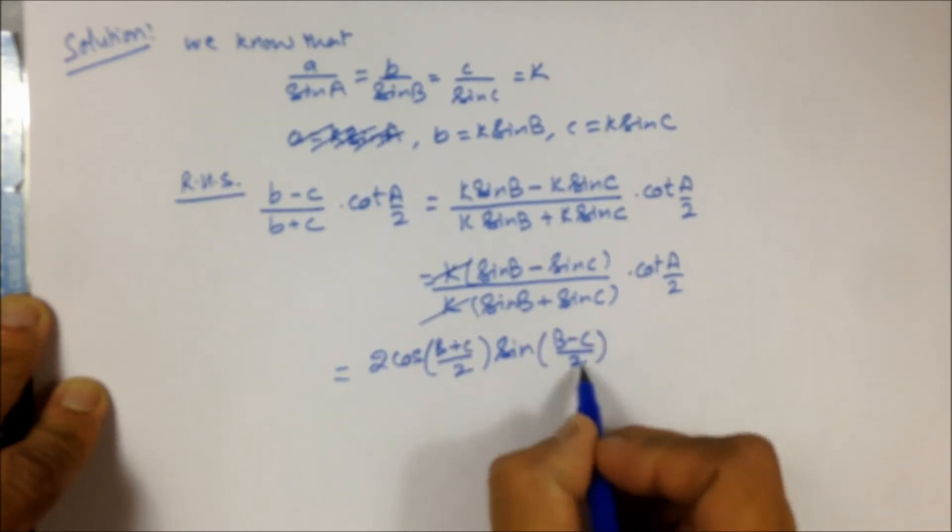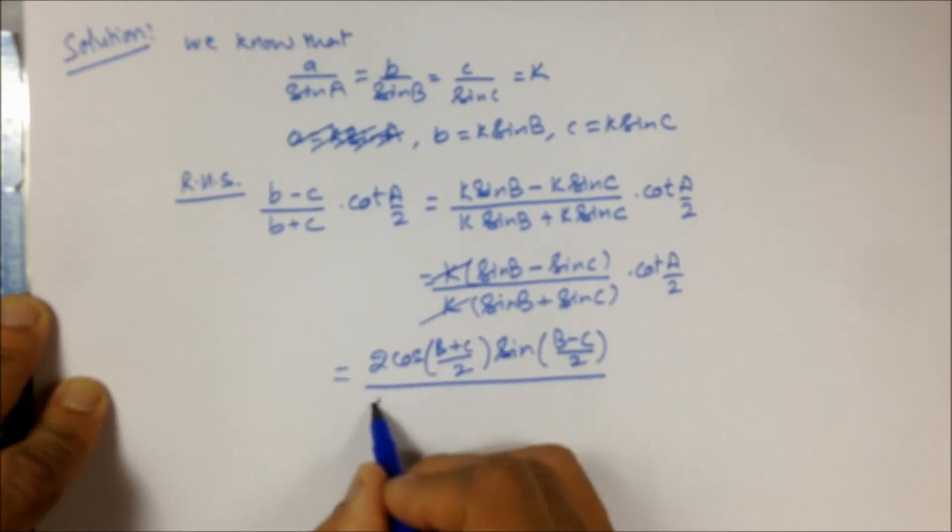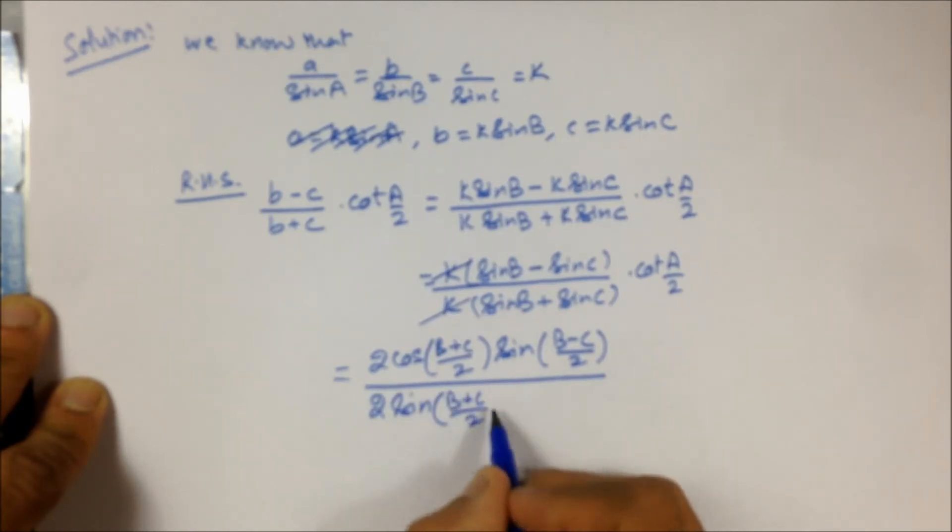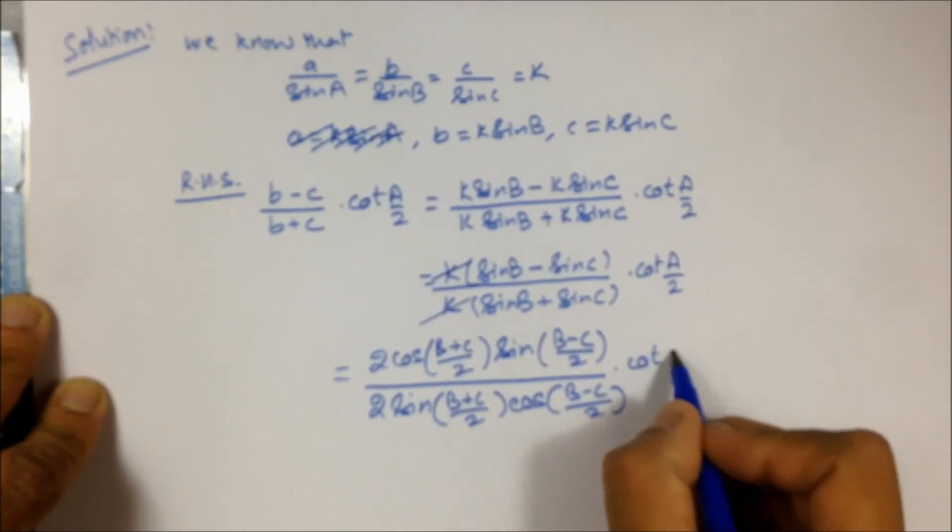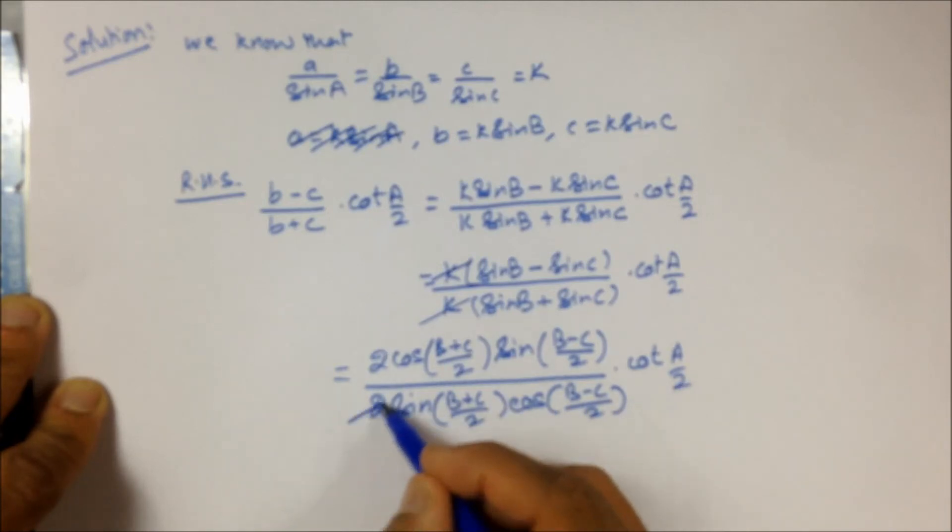Divided by 2·sin((B+C)/2)·cos((B-C)/2) into cot(A/2). Now this 2 and this 2 is gone. cos by sin gives us cot.